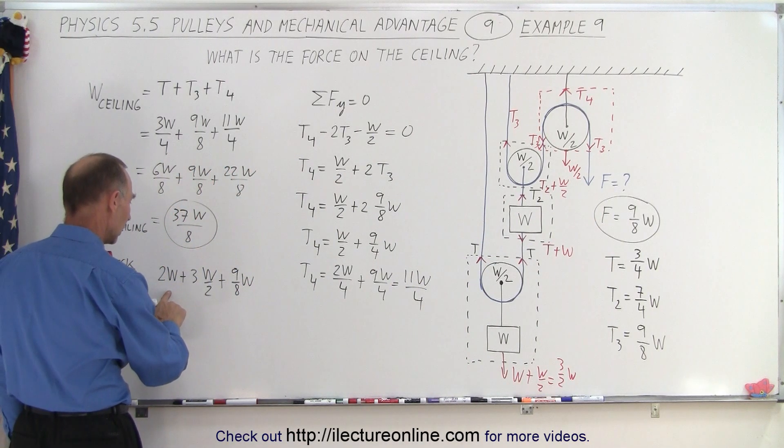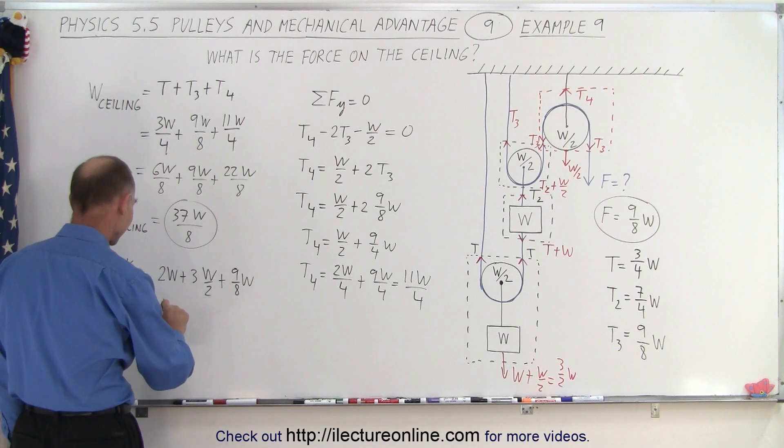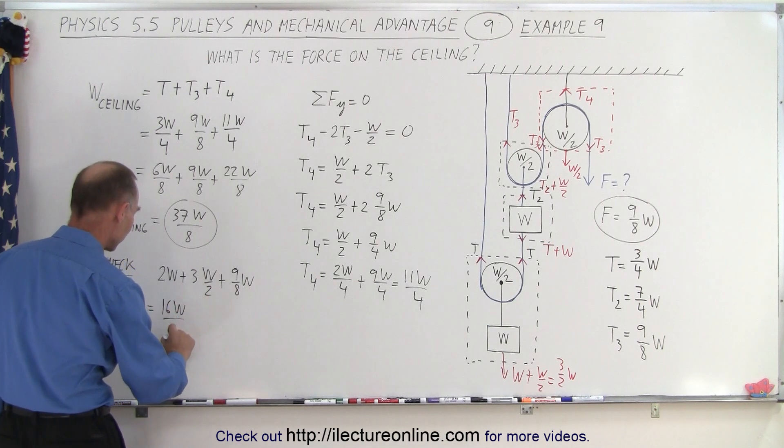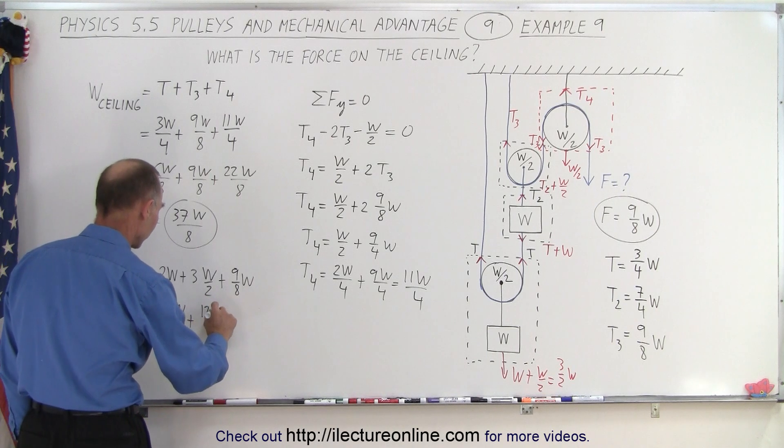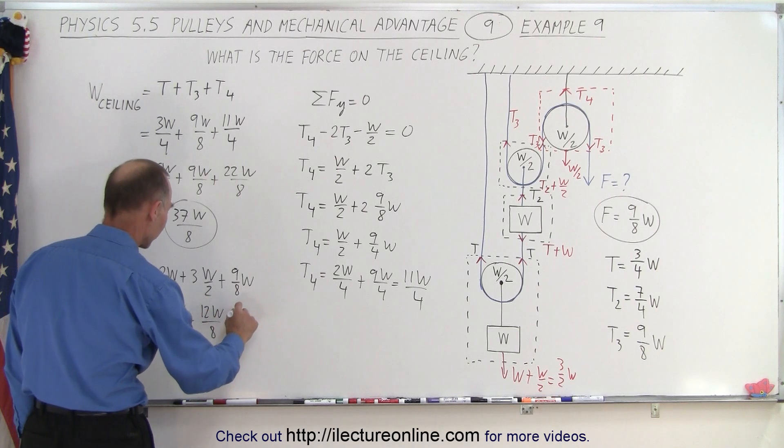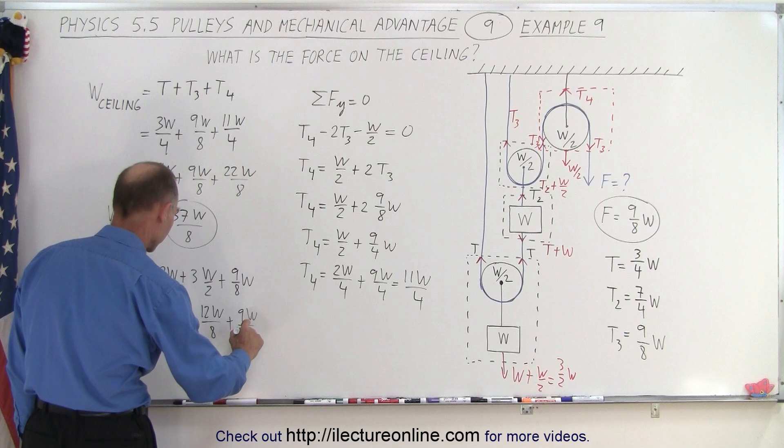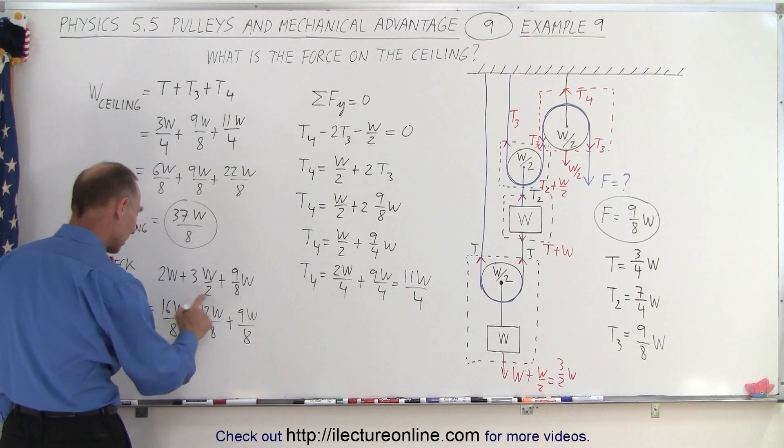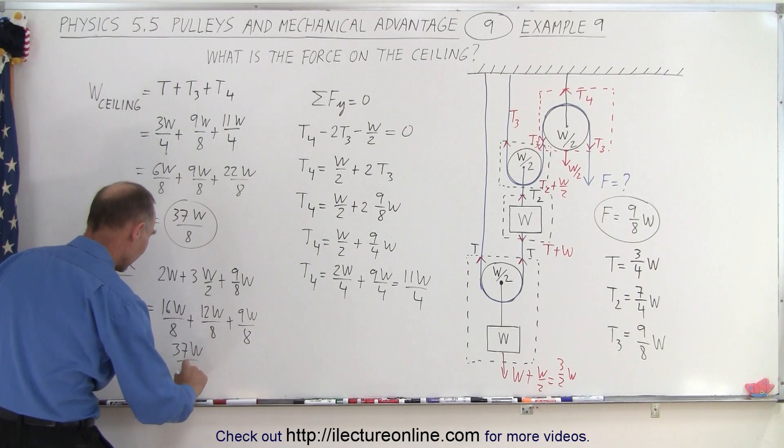So this is equal to 16W over 8, plus 12W over 8, plus 9W over 8. And so that gives us 28 plus 9, or 37W over 8.